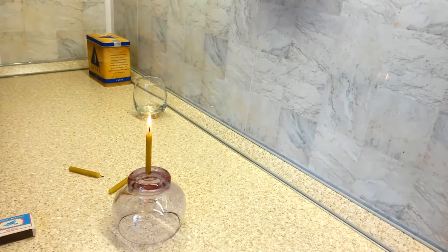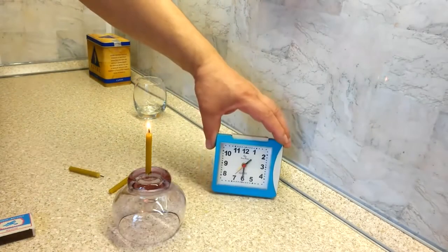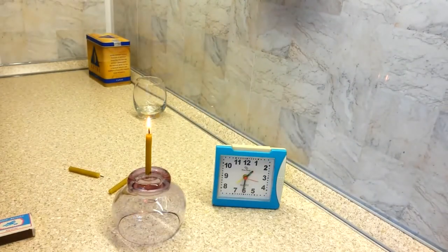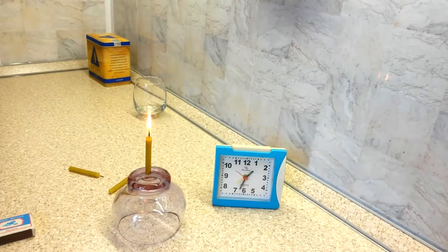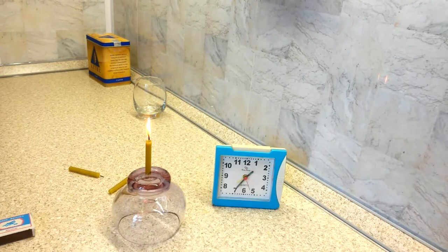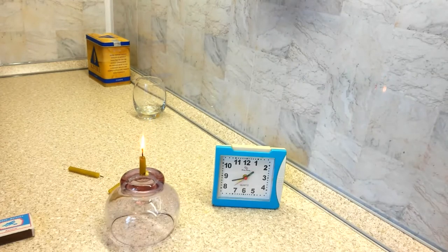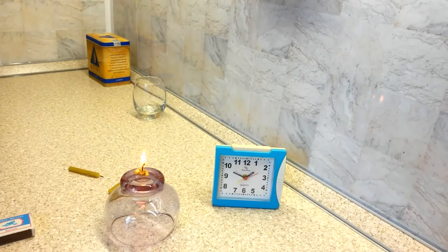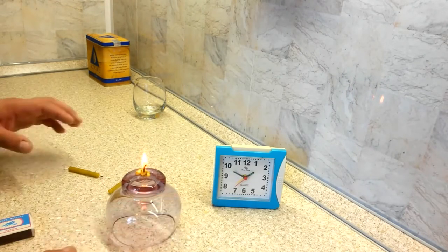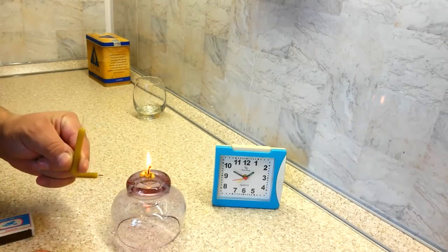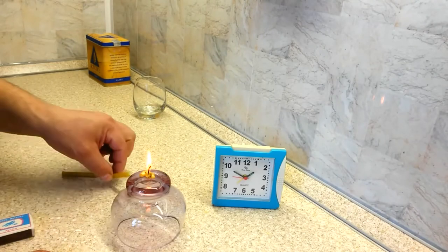First, let's see how long an average small thin candle burns. As you can see, it takes 20 to 30 minutes.